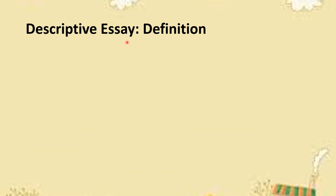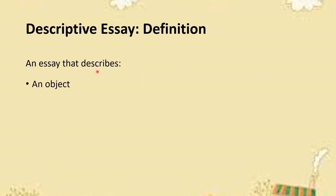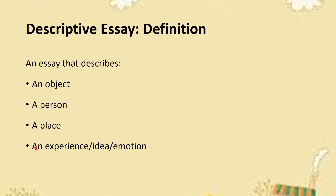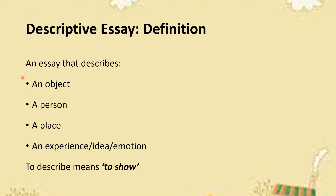Let's first have a look at the proper definition of a descriptive essay. An essay that describes an object, a person, a place, or an experience, idea, or emotion is known as a descriptive essay. To describe means to show — in a descriptive essay you show in front of the reader an object, a person, a place, an experience, idea, or an emotion.